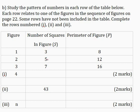5 minus 3 is 2, and 7 minus 5 is 2. You can see that these numbers remain the same, so there is a common difference. Therefore, 7 plus 2 will give me 9.